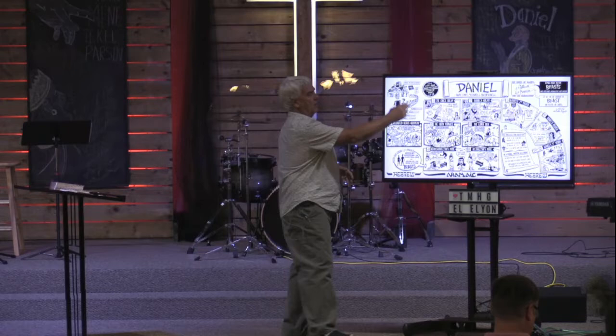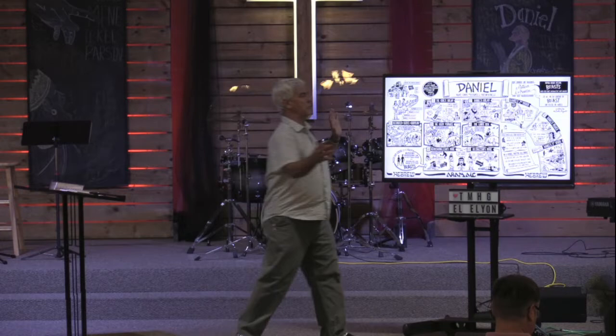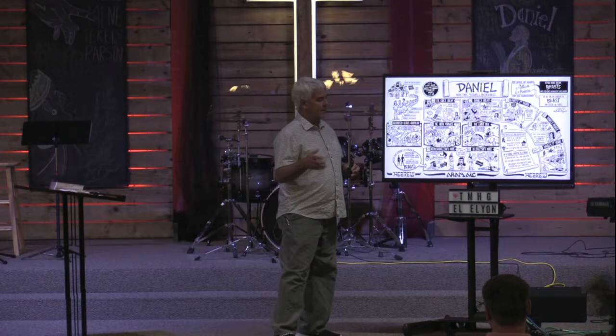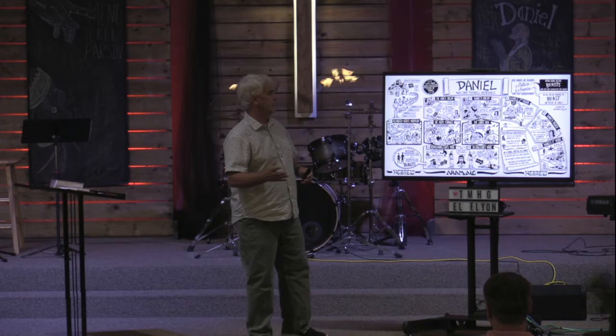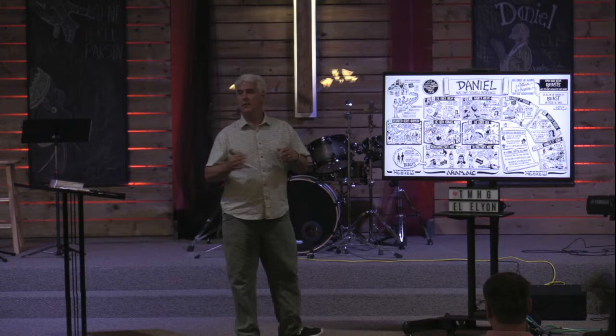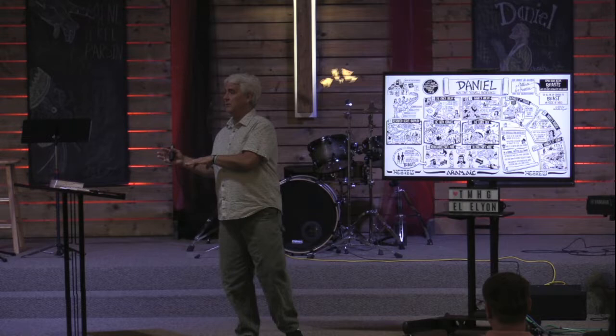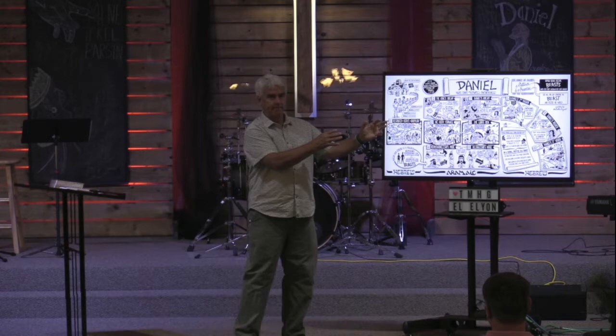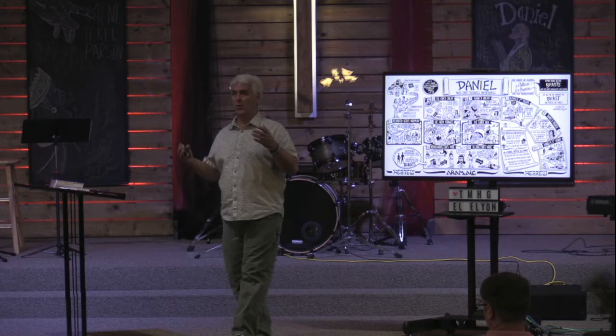I thought about playing the Daniel overview today, but that's another six or seven minutes. They start with kind of an overview of the book. It starts with a blank white page and they use graphics to tell the story. The way other scholars and the Bible Project present it, it's divided into several sections. Chapter one is where Daniel, Shadrach, Meshach, and Abednego are captured when Judah's king Jehoiakim is defeated by the Babylonians and they're taken away.